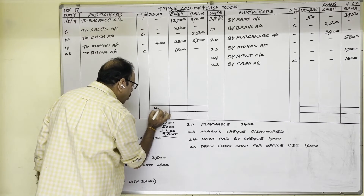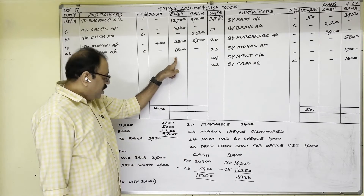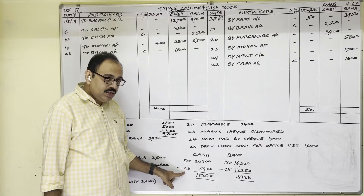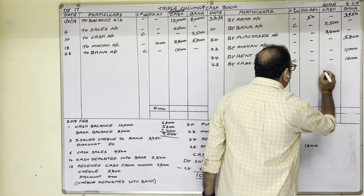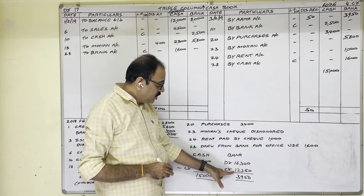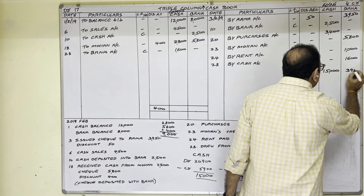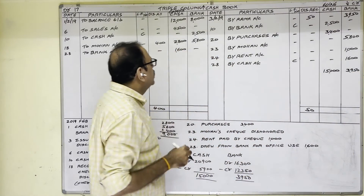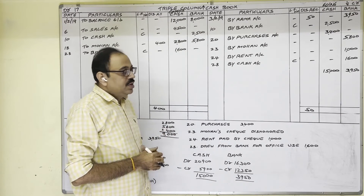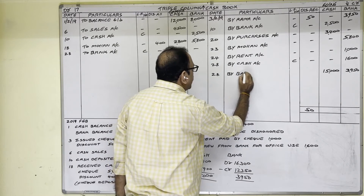Finally we balance the cash book. Discount columns should not be balanced — just put totals. Debit total 400, credit total 50. For cash and bank columns we find the balance. Cash debit column total is 20,900 and credit column total is 5,900 — difference is 15,000. Since credit is less, write 15,000 on credit side as balance carried down. Bank debit column total is 16,300, credit column total is 12,350 — difference is 3,950. Write 3,950 on credit side as balance carried down. Since 2019 is not a leap year, February has 28 days, so the last date is 28th. Write balance carried down with the highest totals: cash 20,900 and bank 16,300.